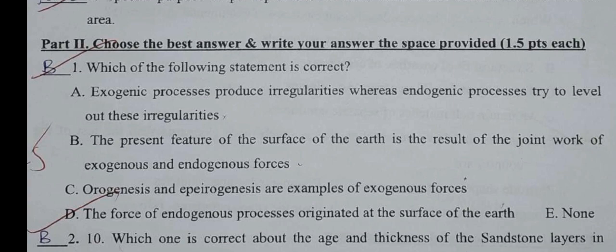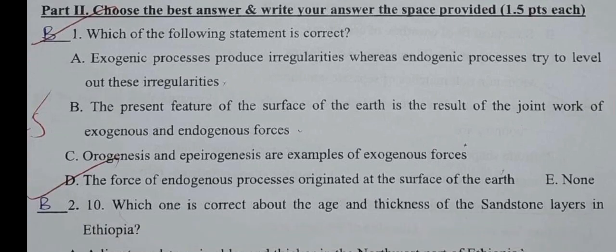A: Exogenic processes produce irregularities whereas endogenic processes try to level out these irregularities. B: The present features of the surface of the earth are the result of the joint work of exogenous and endogenous forces. C: Orogenesis and epirogenesis are examples of exogenous forces. D: The force of endogenous processes originated at the surface of the earth. E: None of the above.